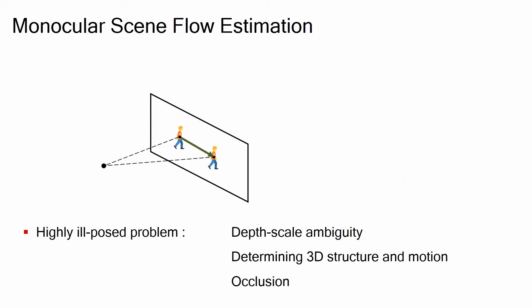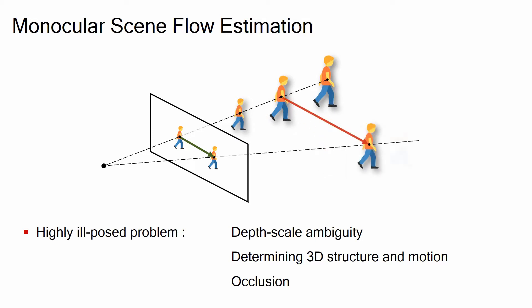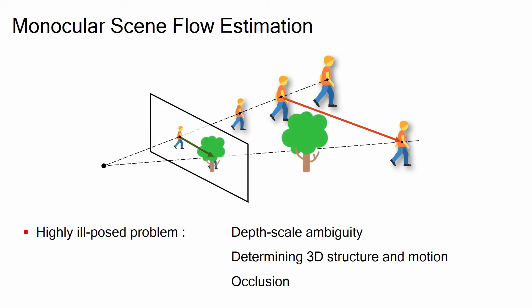This monocular scene flow problem, however, is highly ill-posed. It is challenging to determine the correct scale and depth as well as 3D motion jointly. Also, occlusion makes the problem much harder.